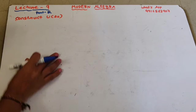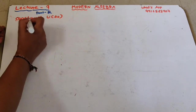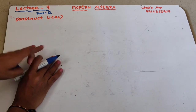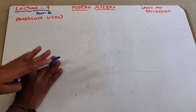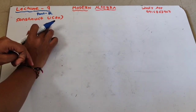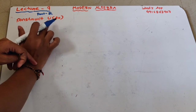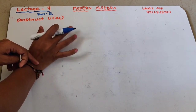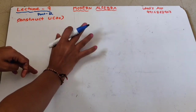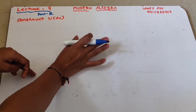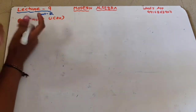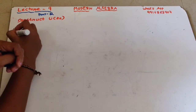The question is: construct U(20). To construct U(20), you first need to know the definition. U(n) is defined as the set of x belonging to the natural numbers such that x is between 1 and n, and gcd(x, n) = 1.